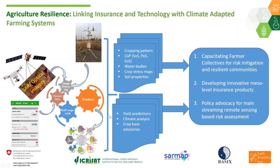Some spatial products are used for insurance products. The workflow integrates satellite imagery, mobile application ground data, and weather parameters to produce cropping pattern maps, length of growing period, crop stress maps, and soil properties. These are combined for yield predictions, climate analysis, and cloud-based services, feeding into farmer collectives for risk mitigation and resilience, meso-level insurance products, policy advocacy, and re-insurance and insurance companies needing timely information.